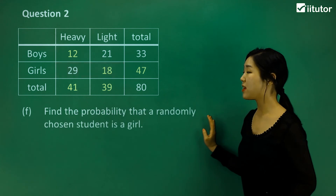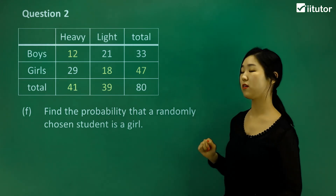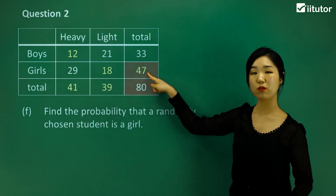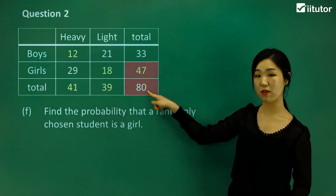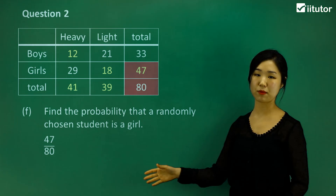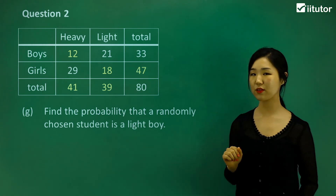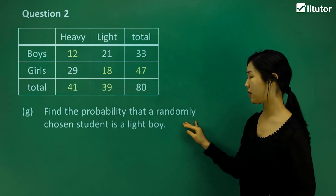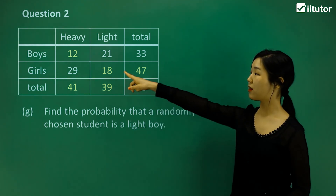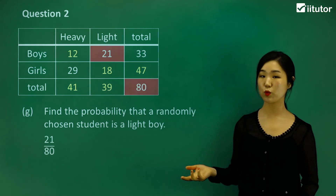Now for the probability questions. Find the probability that a randomly chosen student is a girl: there are 47 girls out of 80 total students, so the probability is 47/80. Find the probability of a light boy: there are 21 light boys, and the total is 80, so the probability is 21/80.